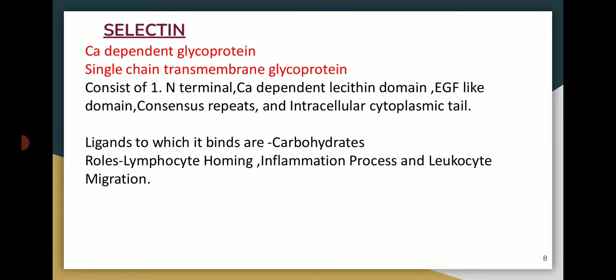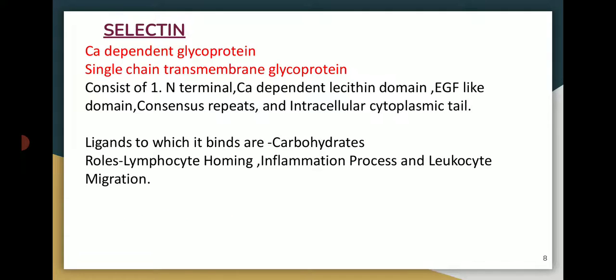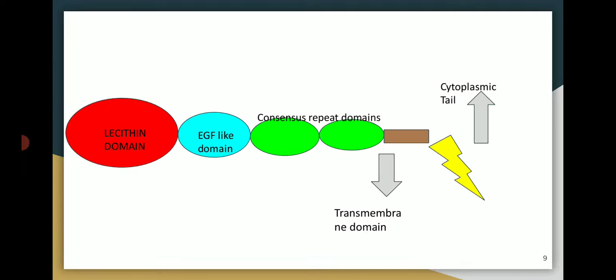The next cell adhesion molecule is selectin, a calcium-dependent glycoprotein and a single-chain transmembrane glycoprotein. Selectin involves important components like an N-terminal, calcium-dependent lectin domain, EGF-like domain, consensus repeat, and an intracellular cytoplasmic tail. The ligands to which it binds are carbohydrates, and its roles include lymphocyte homing, inflammation processes, and leukocyte migration.